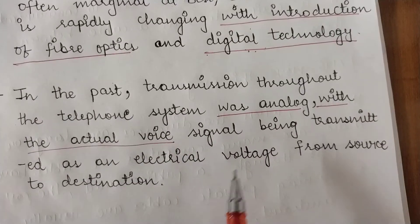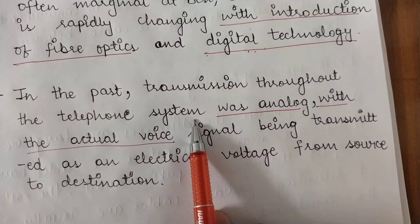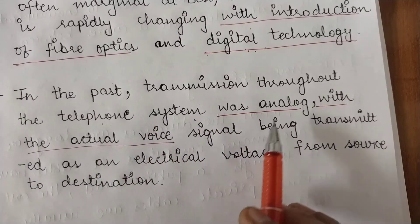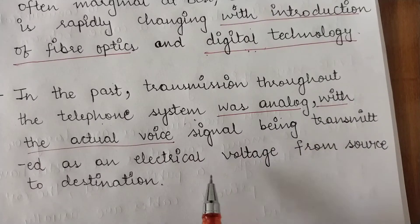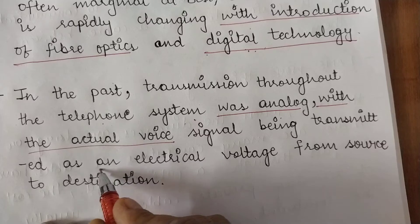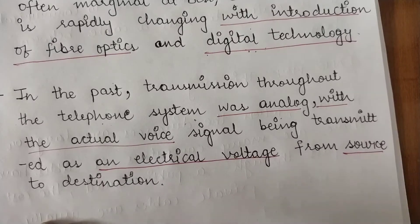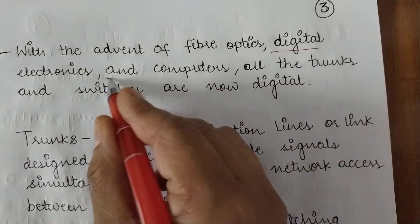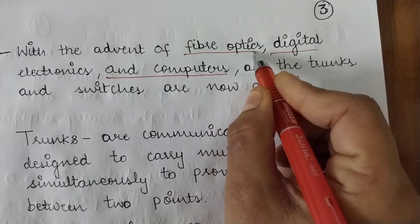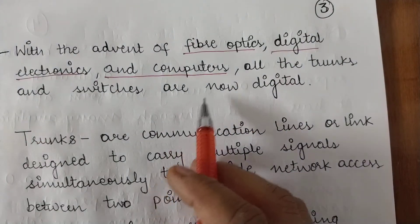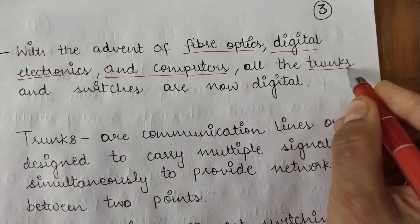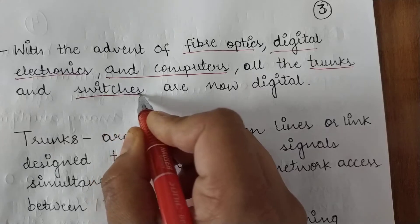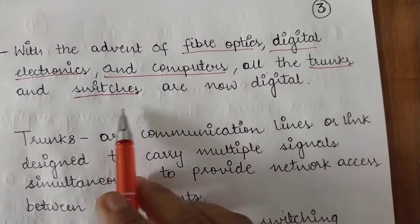Telephone networks are also being digitized now. Earlier, all transmission taking place through the telephone system was analog, with voice signals transmitted as an electrical voltage from source to destination. With the advent of fiber optics, digital electronics, and computers, all the trunks and switches — which are important components of any telephone network — are now digital.